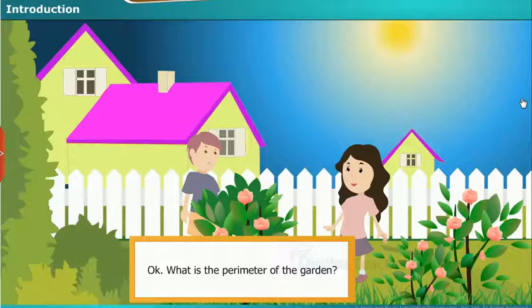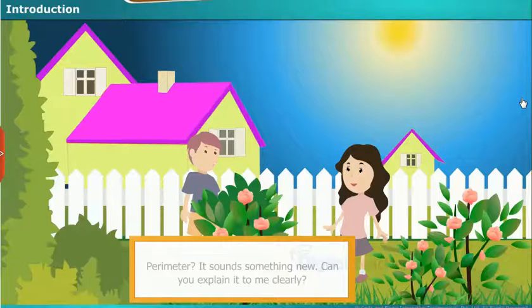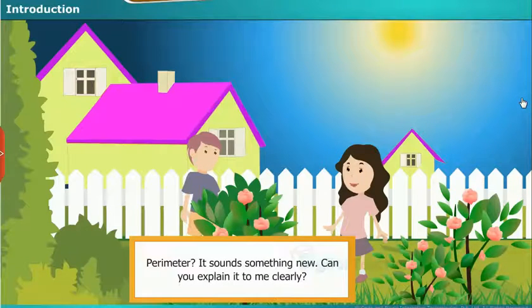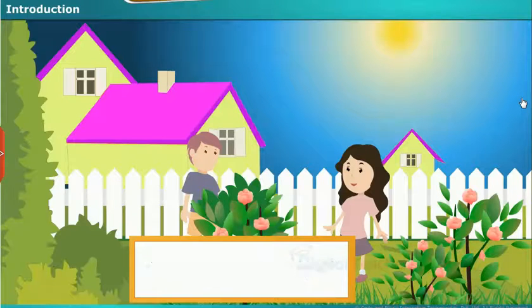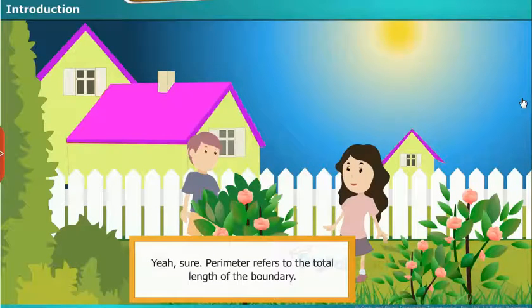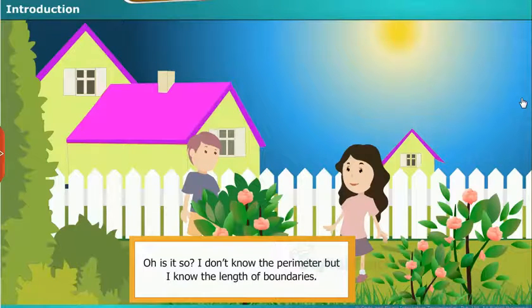Okay, what is the perimeter of the garden? Perimeter? It sounds something new. Can you explain it to me clearly? Yes, sure. Perimeter refers to the total length of the boundary. Oh, is it so? I don't know the perimeter, but I know the length of boundaries.